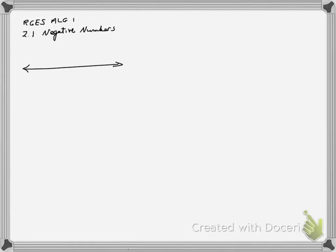This is Regis Algebra 1, and we have Lesson 2.1 on Negative Numbers. Now when we talk about a number line, negative numbers are things we experience in the real world, so we need to be able to describe them.